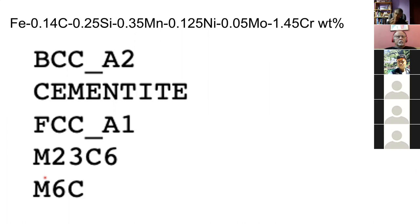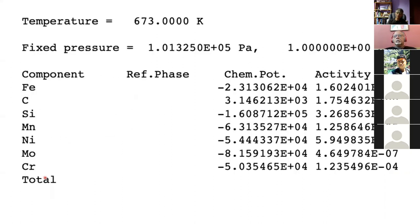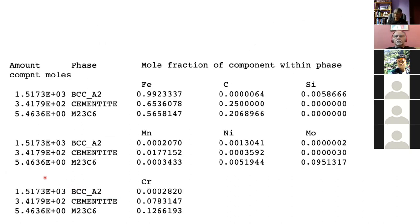If you are going to put the material into service at high temperature, it's very important to examine all the equilibrium phases to decide whether they will form within the timescale of your application. This completes the story on phase diagram calculation — notice I haven't actually drawn any diagram, because the numbers say it all. However, you might want to plot the volume fraction of cementite as a function of temperature; there's no point in plotting many-dimensional phase diagrams for multi-component systems.